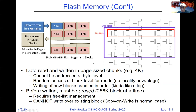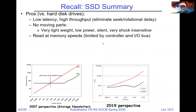In flash memory, copy-on-write is the normal behavior — if you write a block and then want to write it again, you end up having to copy it somewhere else and write the bits you wanted to change. The summary for SSDs versus disk drives: pros are low latency and high throughput because there's no seek or rotational delays; no moving parts so more reliable; lightweight, low power, very shock insensitive; and you can read at memory speeds. Write is more complicated because you have to raise the voltage high enough to force electrons across the insulator barrier, and you have to erase blocks periodically and keep free lists.